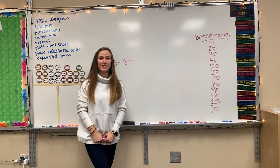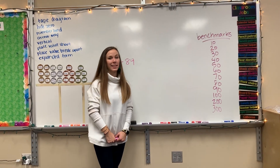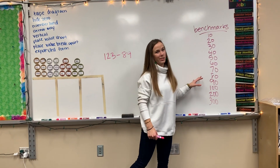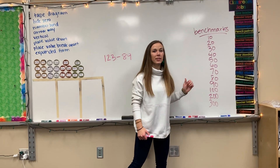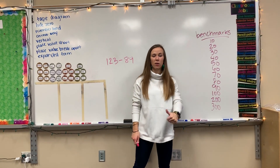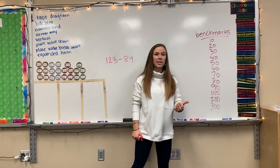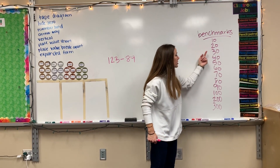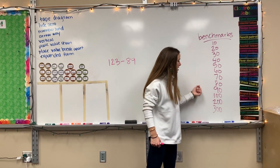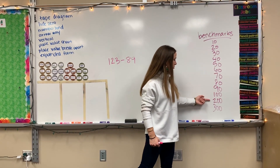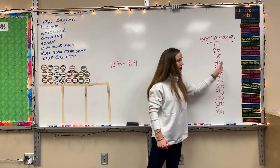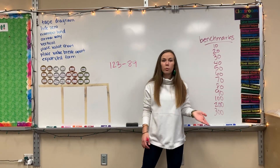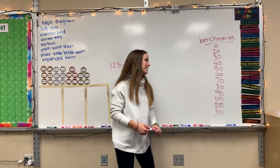The next method is the arrow way. In order to do the arrow method, you need to know benchmarks. Benchmarks are anything that when I count by tens I can get to that number — whether it be 10, 20, 30, 40, up to 100 or 200. They all end in zero, so we'll get to them at some point by counting by 10.